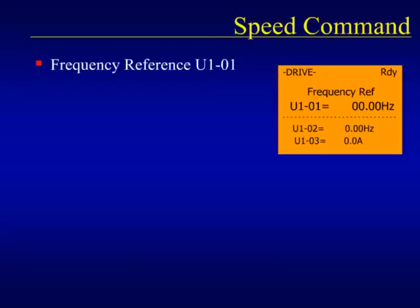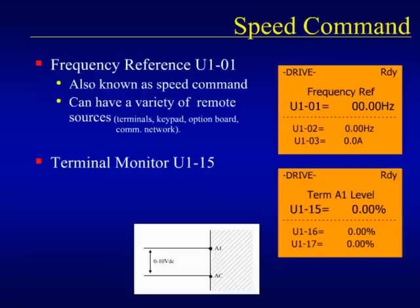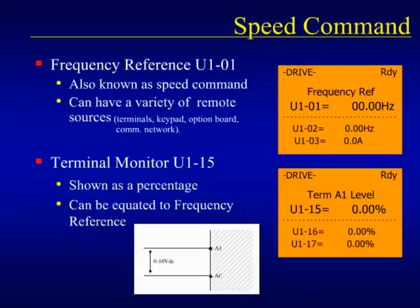The speed command is called the frequency reference and it tells the drive how fast to go. Monitor U1-01 will show the frequency reference no matter what the source of the speed information is. If the source of the frequency reference is a voltage from a controller or a speed pot, then we can use monitor U1-15. U1-15 is the measured level of voltage at the A1 analog input, shown as a percentage of maximum voltage. In most general cases, that maximum voltage equals 60 Hz frequency reference, so 100% equals 60 Hz. We can use U1-15 to see if its value matches U1-01 — for instance, if U1-15 shows 50%, then U1-01 should equal 30 Hz. If there is a discrepancy between the two, it shows that drive programming is not set up properly to use the analog input as the frequency reference, or that the drive is in local control.